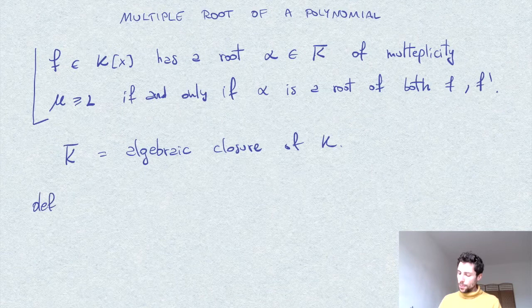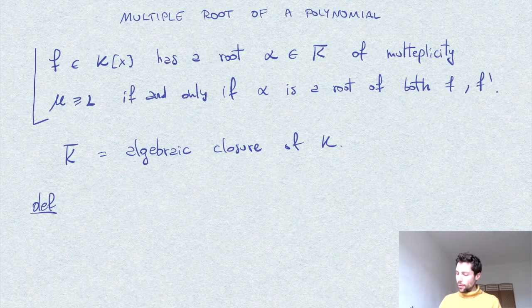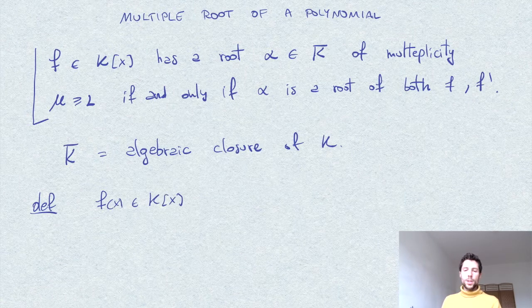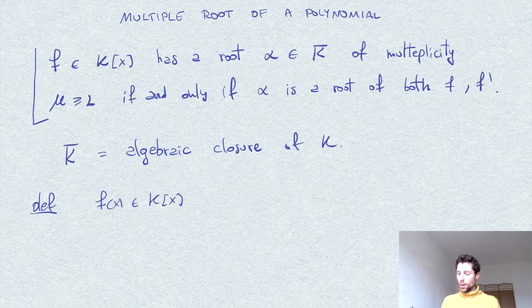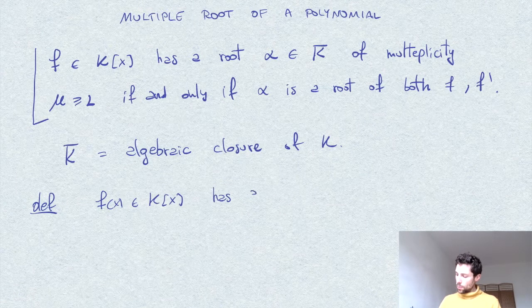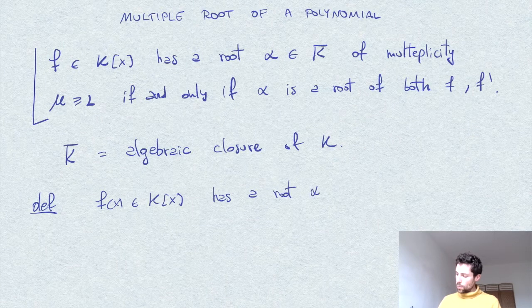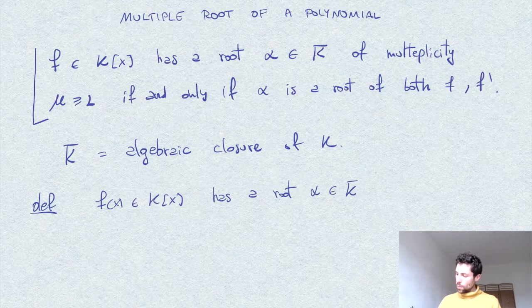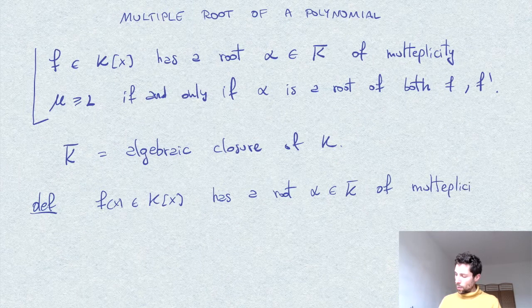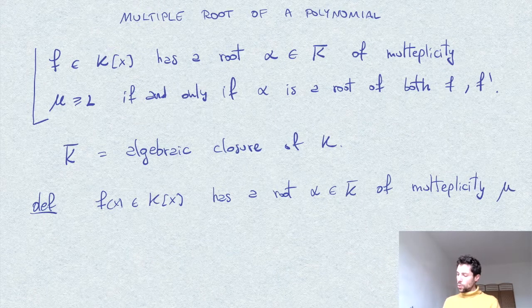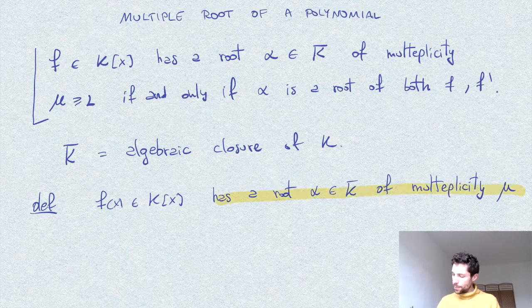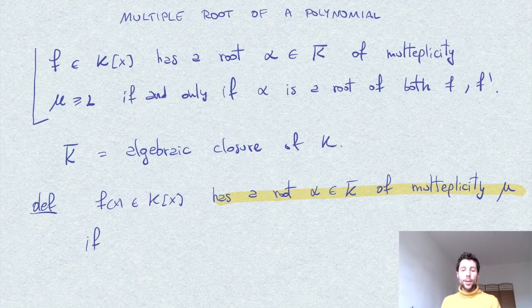let's recall this. So a polynomial f in k of x, we say that has a root of a certain multiplicity. So a multiplicity mu. So this is, I want to give the definition of this. If we can write,